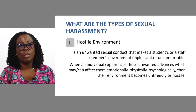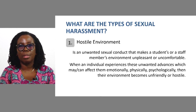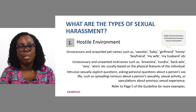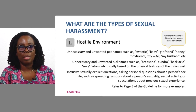Now let's go into the types of sexual harassment. First, hostile environment sexual harassment. This is unwanted sexual conduct that makes a student's or staff member's environment unpleasant or uncomfortable. When an individual experiences these unwanted advances, which may affect them emotionally, physically, or psychologically, their environment becomes unfriendly and hostile. Examples include unnecessary and unwanted pet names such as sweetie, baby, girlfriend, boyfriend, my wife, my husband, etc. There are also unnecessary and unwanted nicknames, usually based on physical features of the individual.